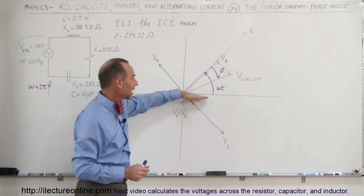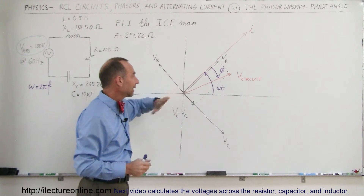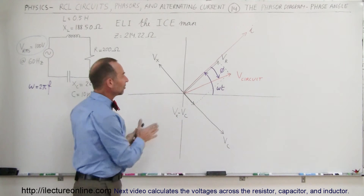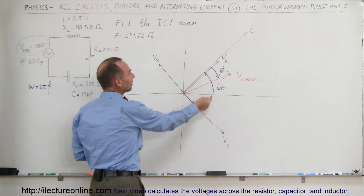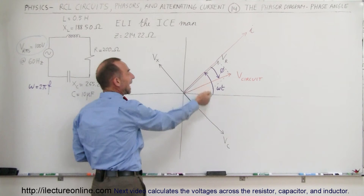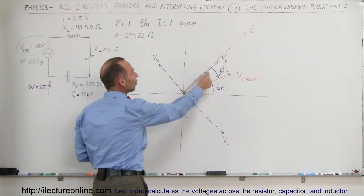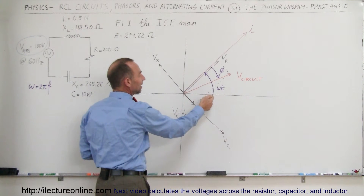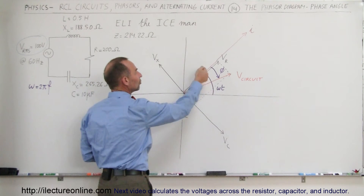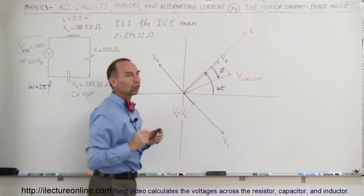They have the same angle at any point in time. As this phase diagram rotates, the angular distance to the voltage across the resistor is the same as the angular distance to the current in the circuit.